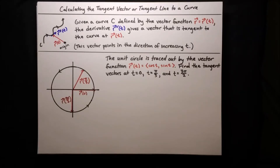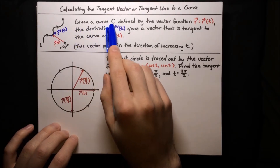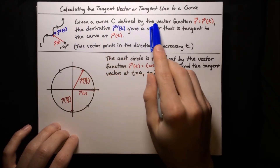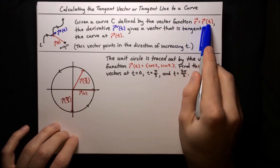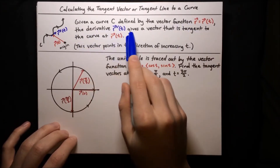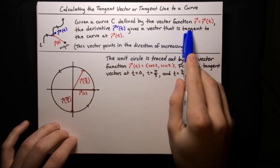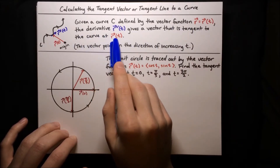In this video, I'm going to show you how to calculate the tangent vector or tangent line to a curve. The idea is that if we're given a curve C, which is defined by a vector function r equals r of t, then the derivative r prime of t gives a vector that is tangent to the curve at r of t.